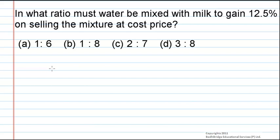In what ratio must water be mixed with milk to gain 12.5% on selling the mixture at cost price? The options are 1 is to 6, 1 is to 8, 2 is to 7, or 3 is to 8.